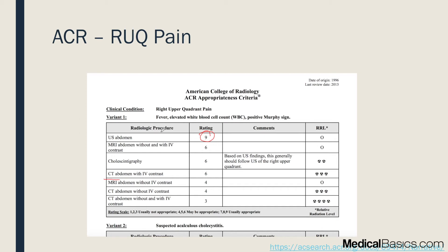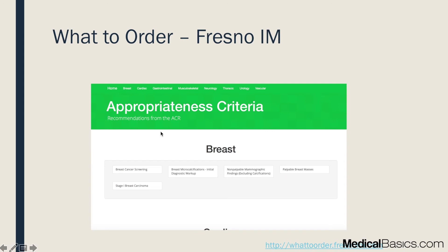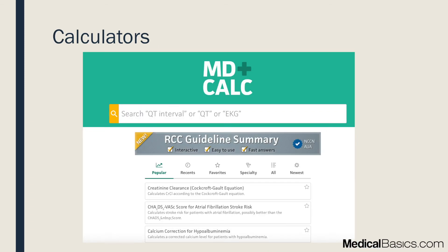The ACR criteria are also useful if you just have a random complaint like left upper quadrant pain and you want to image but aren't sure what to order or why. Another helpful website is 'What to Order' by Fresno IM, which takes all the ACR appropriateness criteria and presents it in a much more intuitive and user-friendly format.